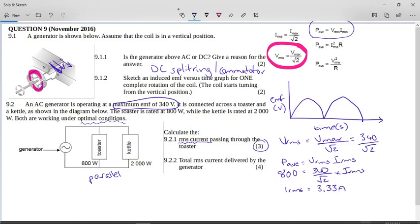So this is the RMS current passing through the toaster. Now it says to you, the total RMS current delivered by the generator.